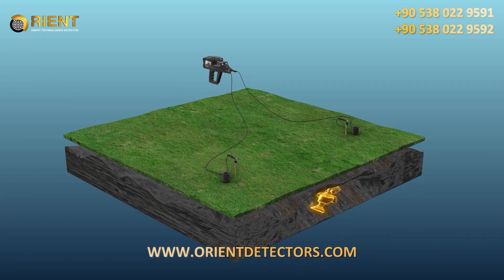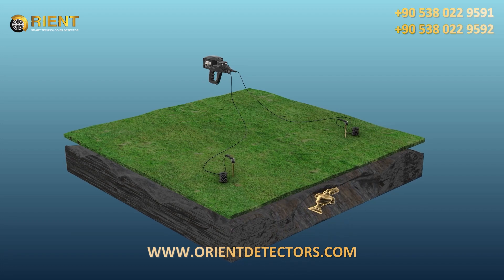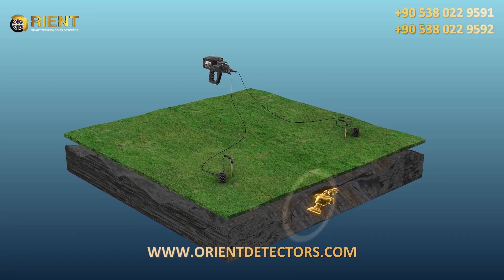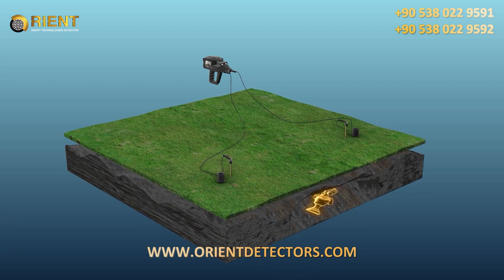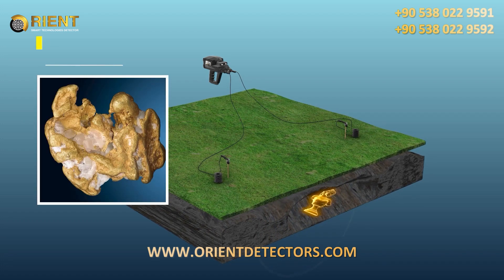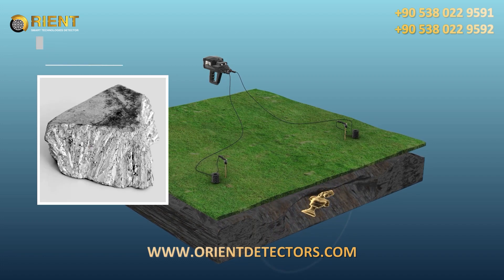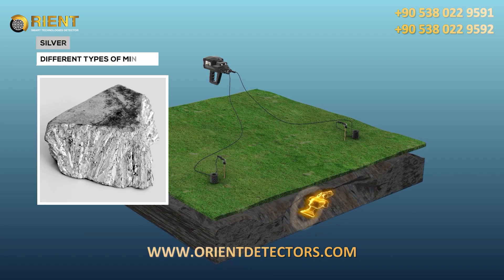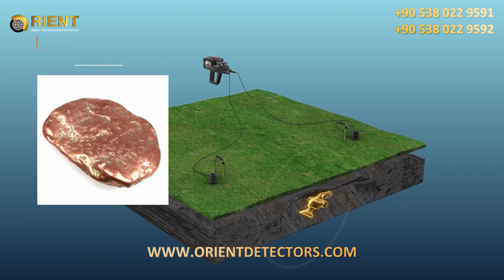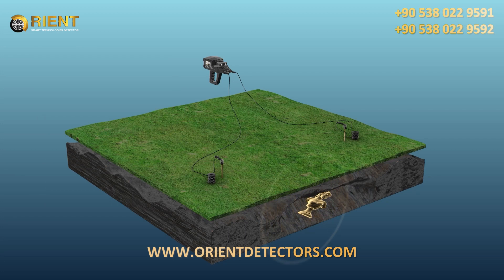By pre-selecting in the system settings, the geophysical system will differentiate between metals such as gold, silver, and copper, and even groundwater deposits.